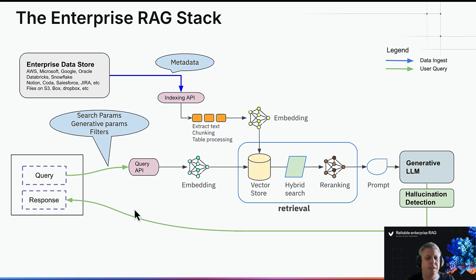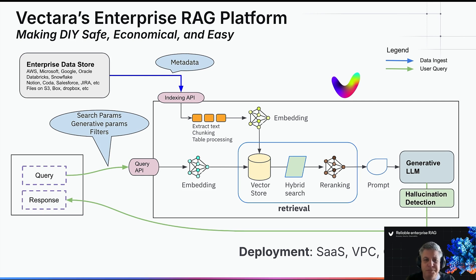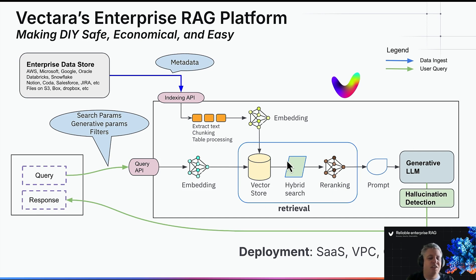This is a build of a RAG stack, and as you can see, there are a lot of different components. What Vectara does is put all of this in a box — think of it as RAG as a service, where all these components are part of what we provide. It can be a SaaS format where you send all the data to us, or it can be in your own VPC, or even on premise on your own hardware. The stack is pre-built and you don't have to build or manage it. All you have to do is use external APIs for indexing and querying — first to index the data, and then to run query flows through your user interface.